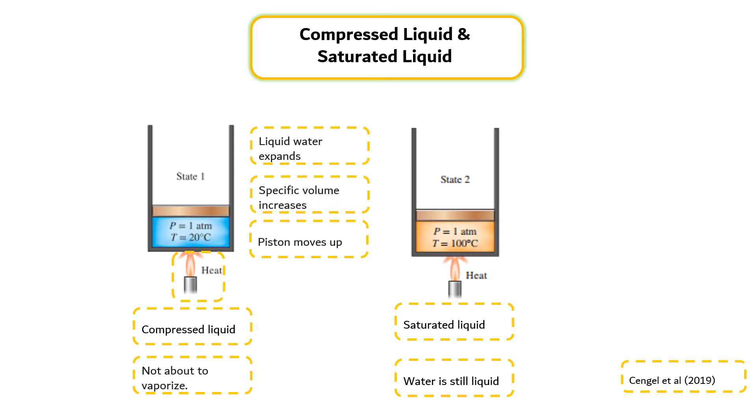Once boiling starts, the temperature stops rising until the liquid is completely vaporized. The temperature will remain constant during the entire phase change process if the pressure is held constant. During a boiling process, the only change we will observe is a large increase in the volume and a steady decline in the liquid level as a result of more liquid turning to vapor.